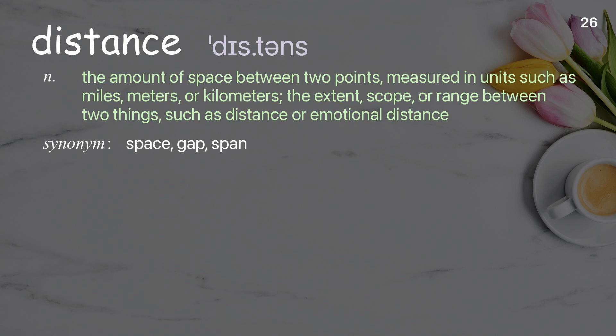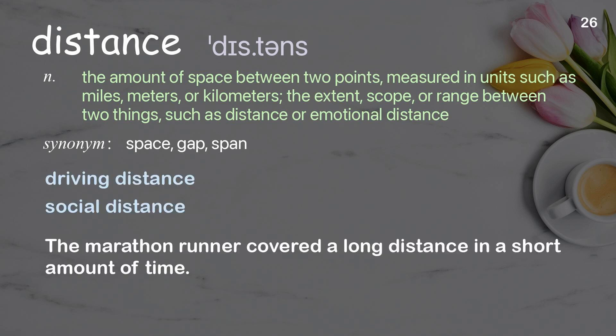Distance: The amount of space between two points, measured in units such as miles, meters, or kilometers; the extent, scope, or range between two things, such as physical or emotional distance. Examples: The marathon runner covered a long distance in a short amount of time.